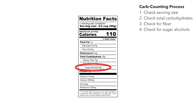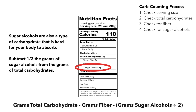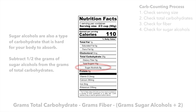Also, look for sugar alcohols. These are also hard for your body to digest, but not quite as hard to digest as fiber. Subtract one half of the grams of sugar alcohols from the total carbohydrates.